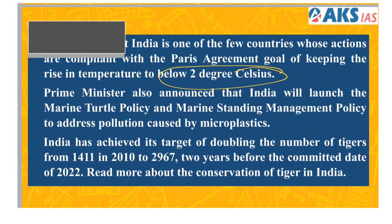The Prime Minister announced two important policies: the Marine Turtle Policy and the Marine Stranding Management Policy, to address pollution caused by microplastics. India has also achieved its target of doubling the number of tigers — in 2010 there were only 1,411 tigers, but today the tiger population has increased to around 3,000.